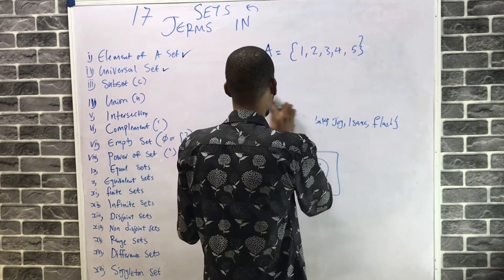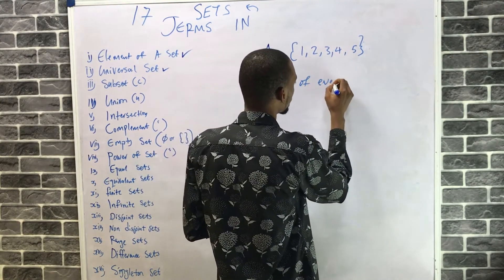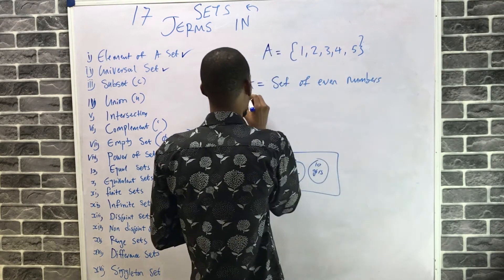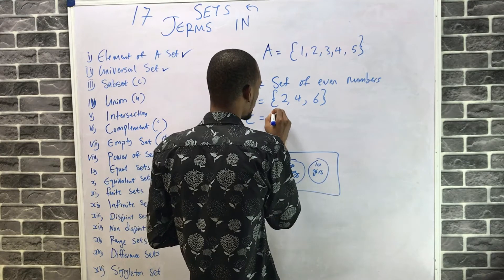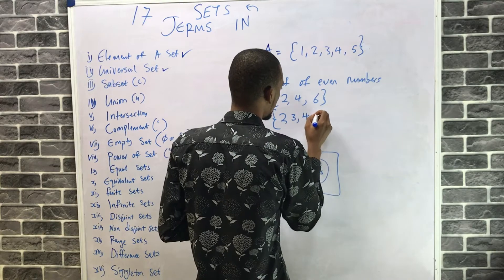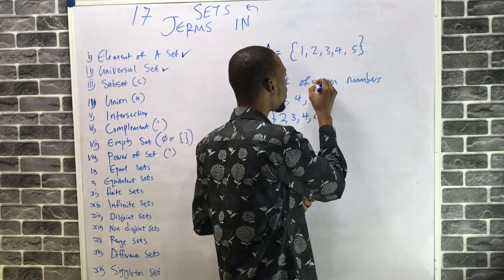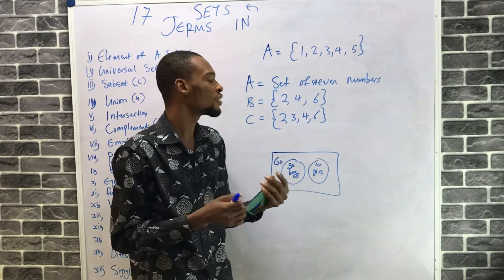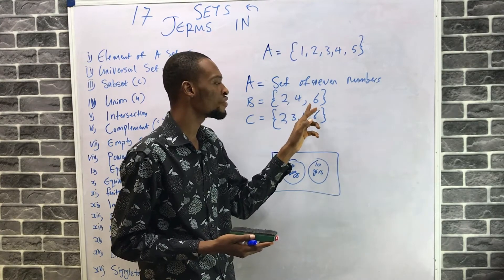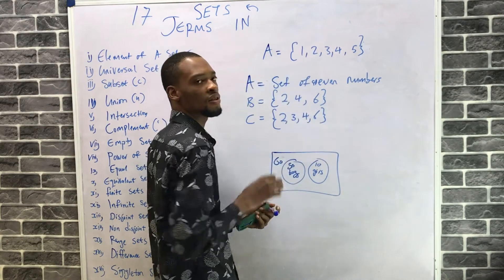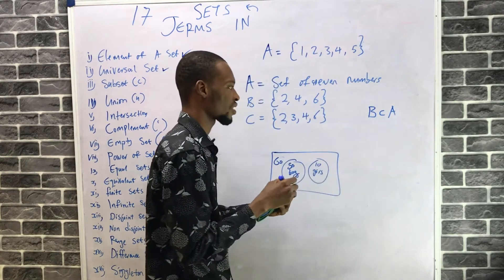Let me give another example. If A is the set of all even numbers, and B is {2, 4, 6, 8}, then 2 is an even number, 4 is an even number, 6 is an even number. Every element in B is also contained in A. This implies that B is a subset of A — B is under A.